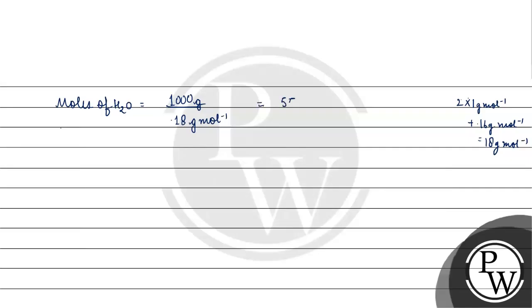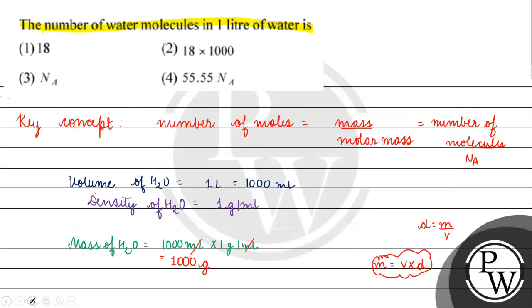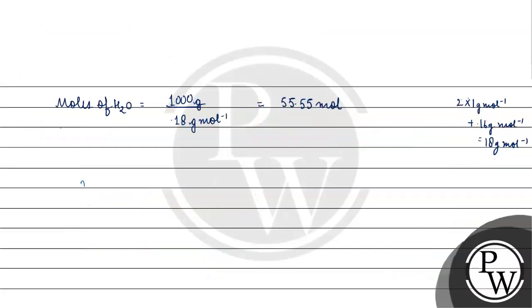We have 55.55 moles of water. Now what do we have to do? We have to find number of molecules. Number of water molecules will be equal to number of moles into Avogadro's number.